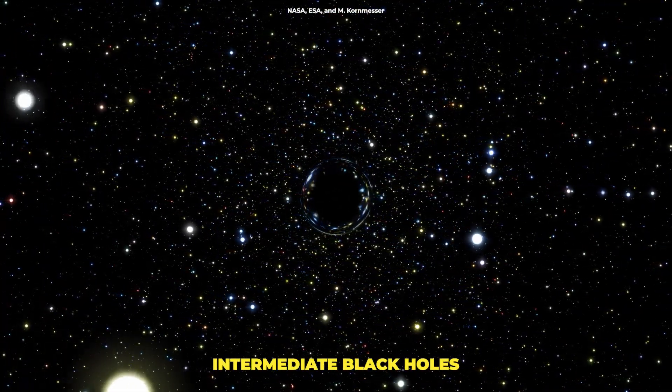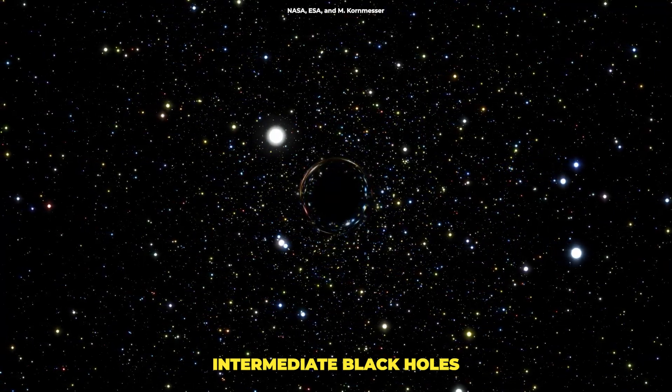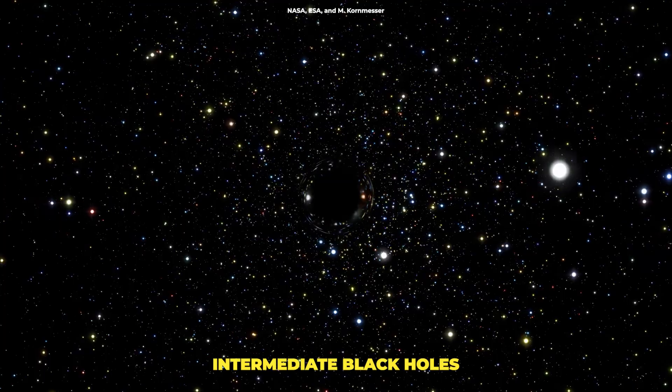And then there's a third, more mysterious type called intermediate black holes. These are harder to find and seem to be in between stellar and supermassive in size. Our understanding of them is still evolving.